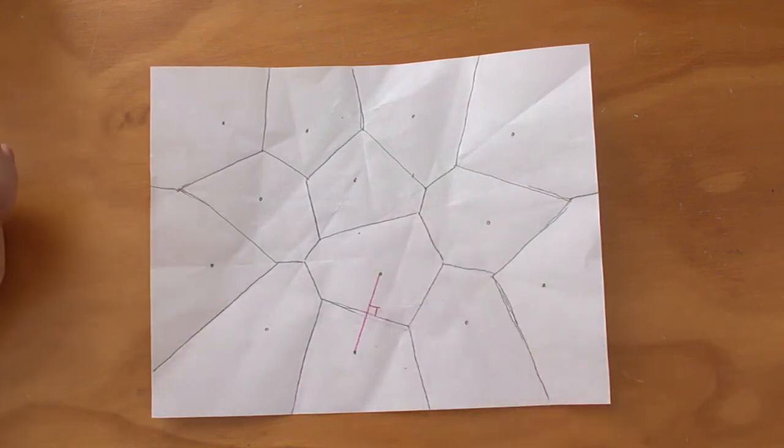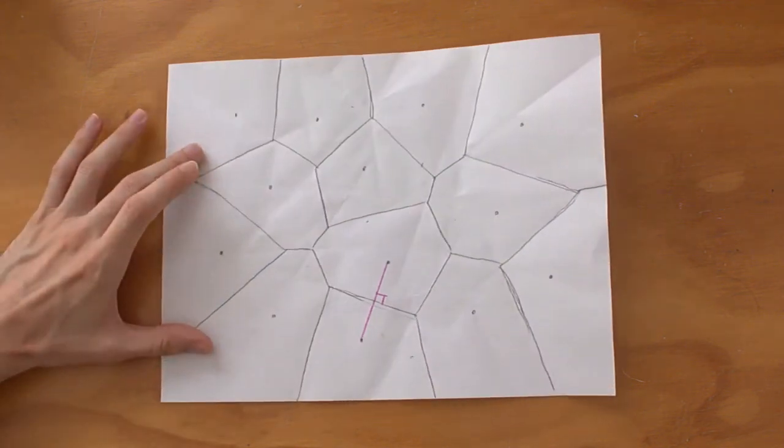You could watch the points move and watch the different lines fold and how the Voronoi moves. It would be a manual way of constructing a Voronoi cell animation. I think it's a nifty idea.